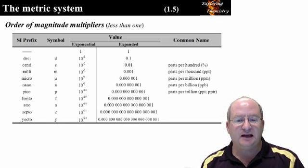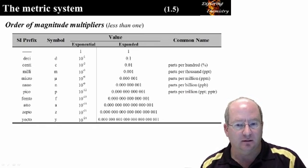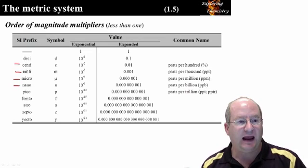The SI prefixes less than 1 are listed here. The ones that are commonly used in chemistry are centi, milli, micro, nano, and pico.